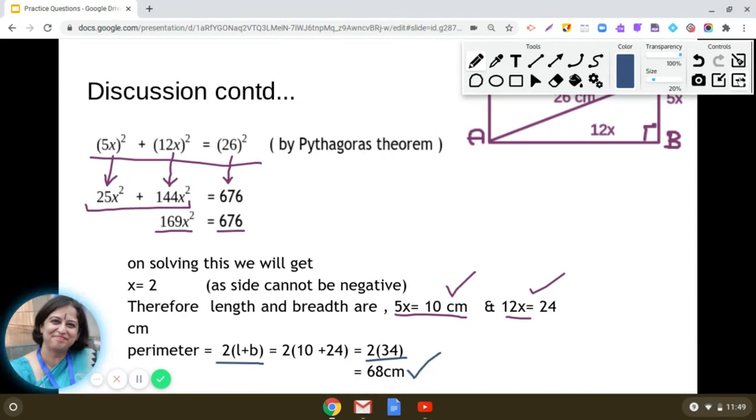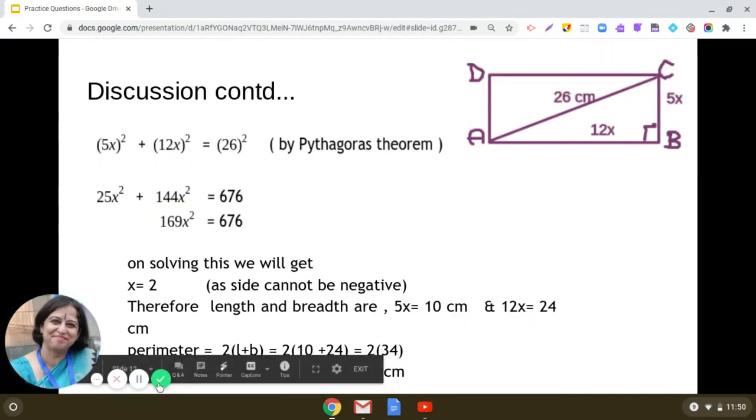So this is how we have found the length, breadth and the perimeter of the rectangle. I hope it is clear to you. Thank you.